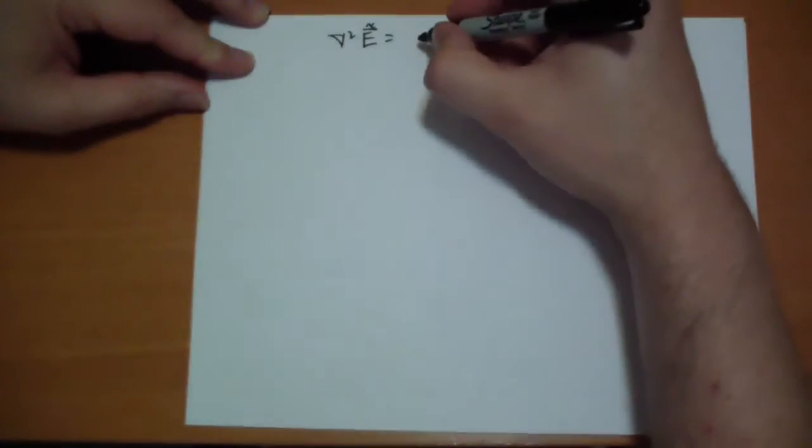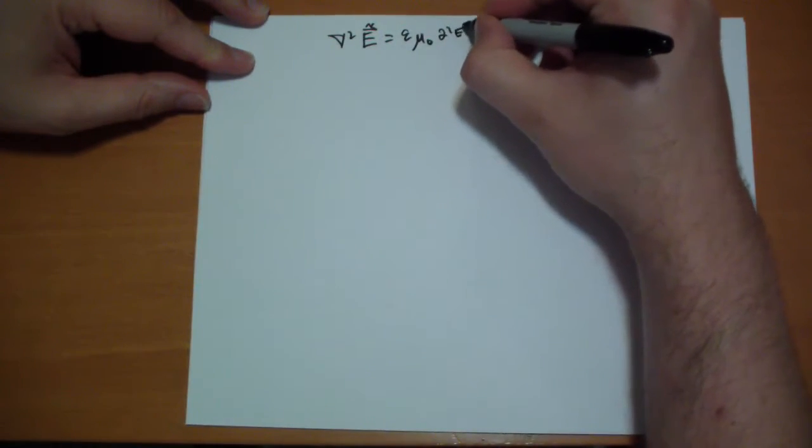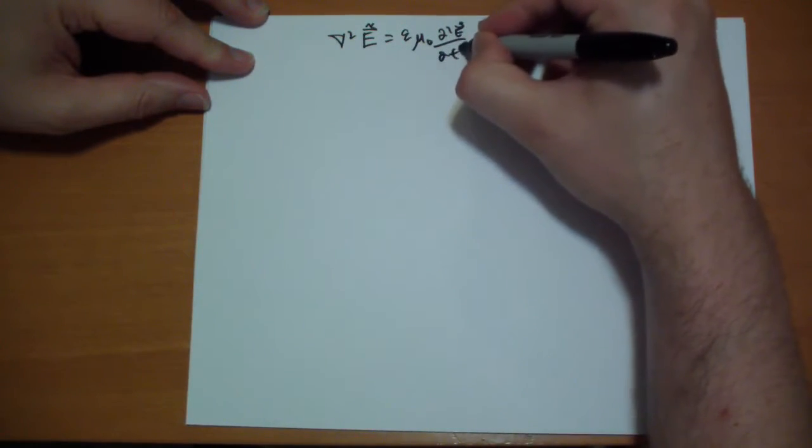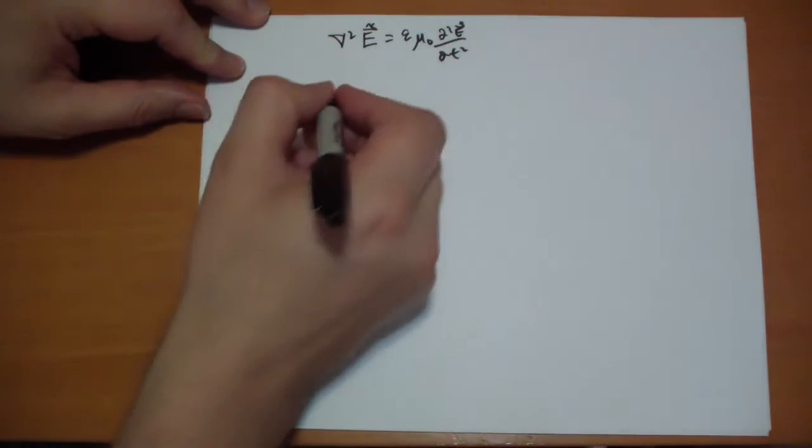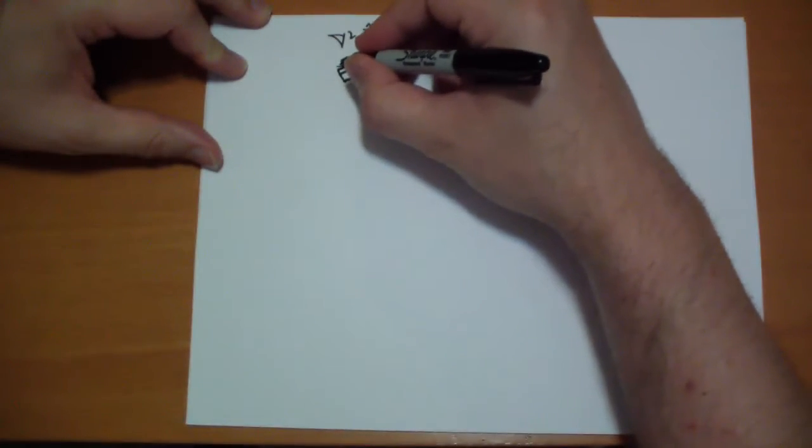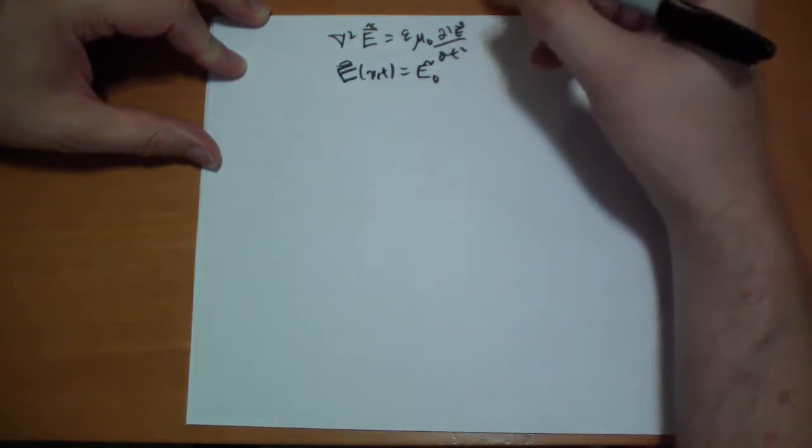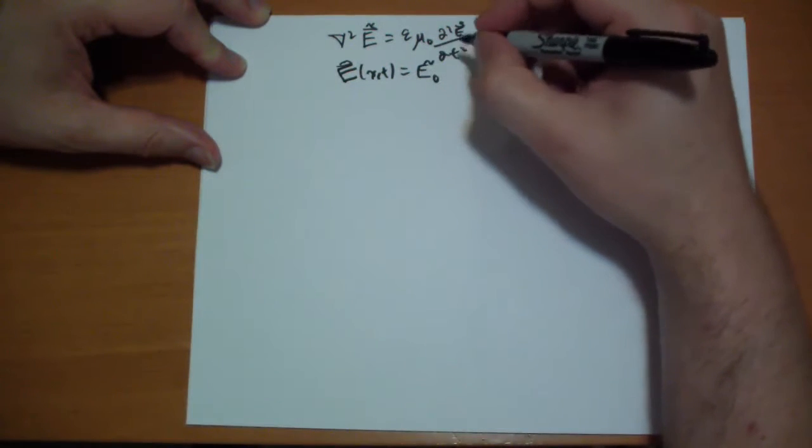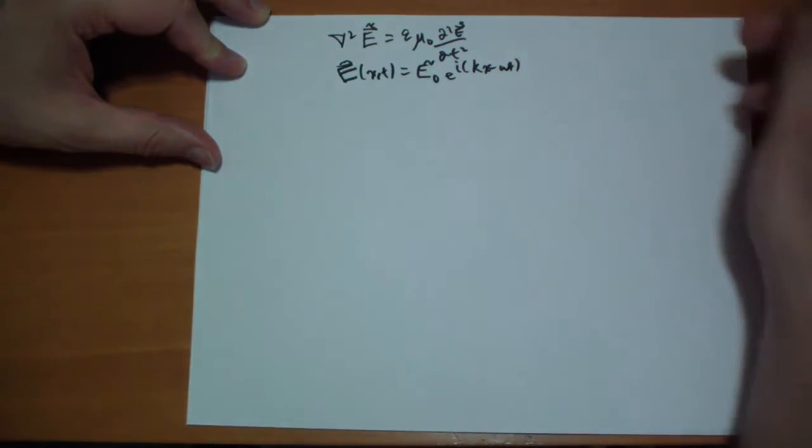These are the equations that we get from it. We get epsilon times mu naught times d squared of E vector complex divided by d t squared, and we get the same solution as before. E vector complex of X comma T is equal to E not vector complex E to the I kappa X minus omega T.